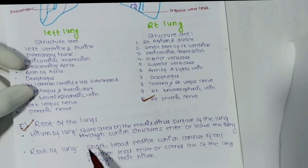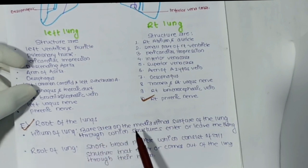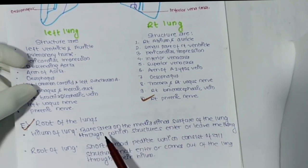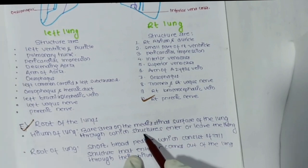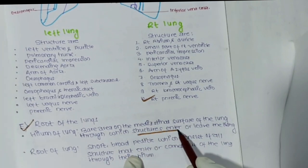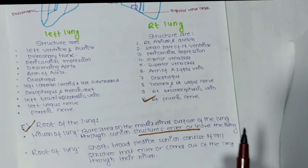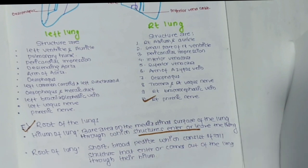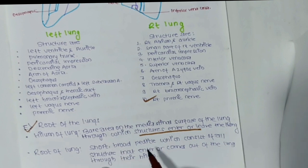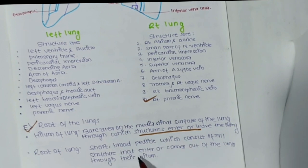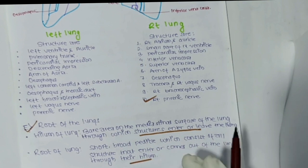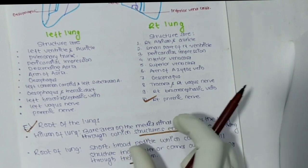The root of lungs consists of the hilum of lungs. The hilum is the bare area of the mediastinal surface of the lungs through which structures enter and leave. The root of lungs is a short broad pedicle which consists of all structures that enter and exit the lungs through the hilum — it is the pathway through which structures pass.